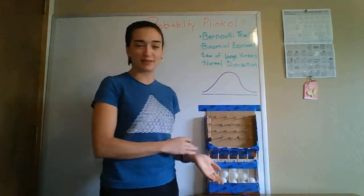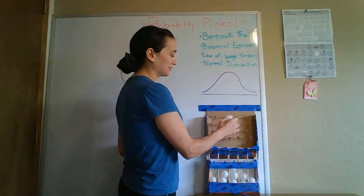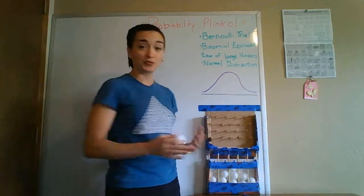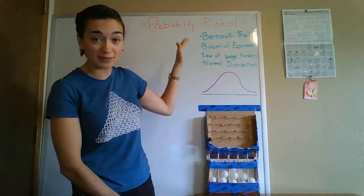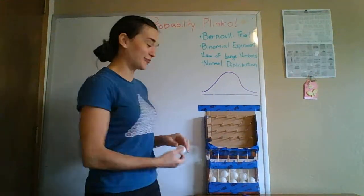So, assuming that my Plinko is unbiased and the ball is likely to go right or left with the same probability, if this Plinko board was a thousand times bigger, it would be much more credible.